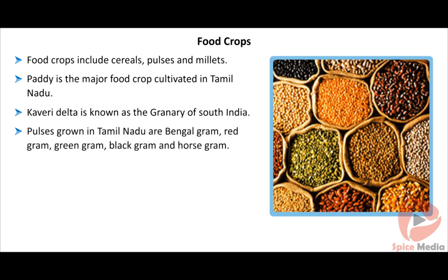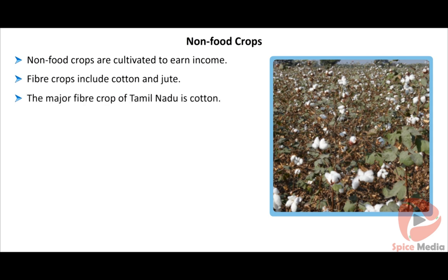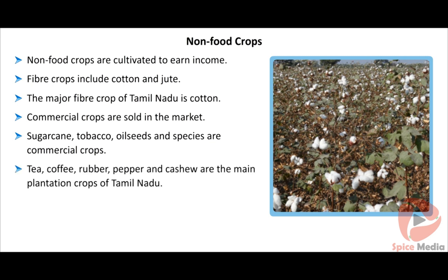Pulses grown in Tamil Nadu include Bengal gram, red gram, green gram, black gram, and horse gram. Non-food crops are cultivated to earn income. Fiber crops include cotton and jute — the major fiber crop is cotton. Commercial crops sold in the market include sugarcane, tobacco, oil seeds, and spices.